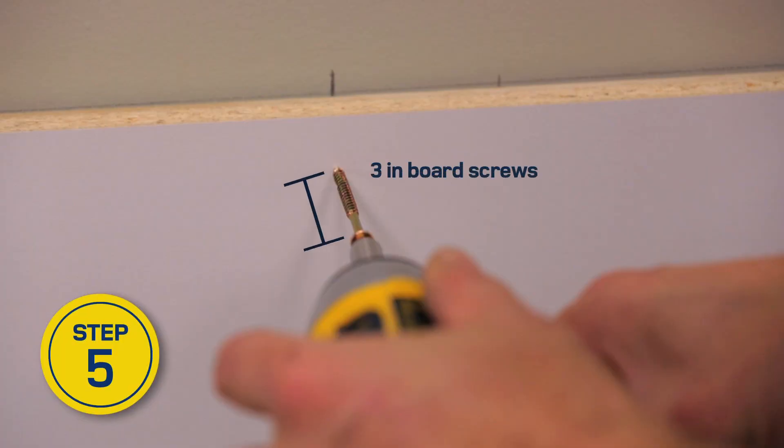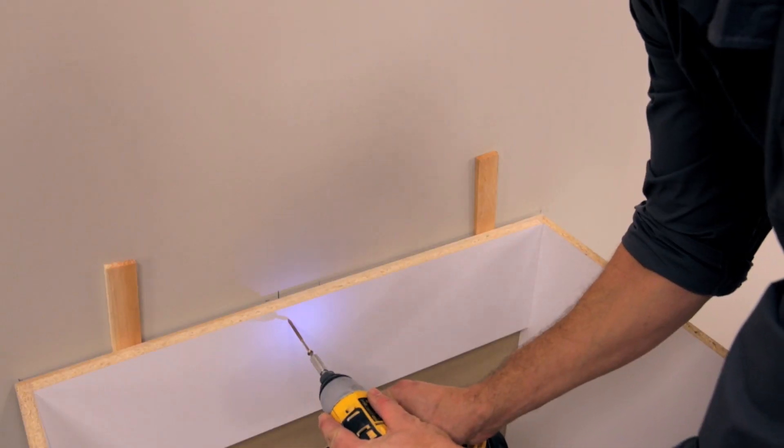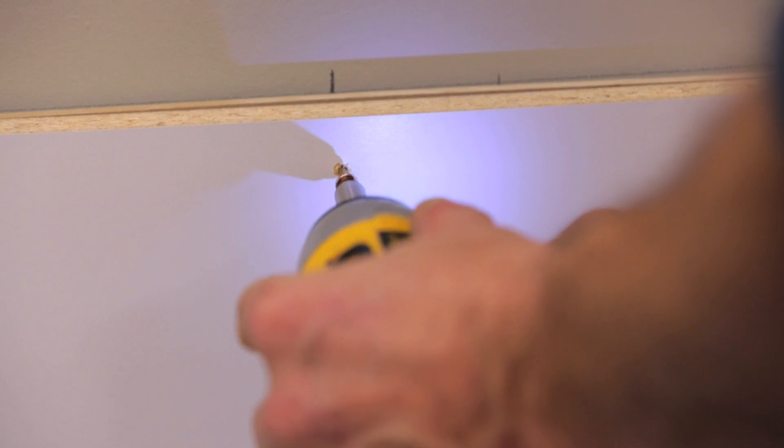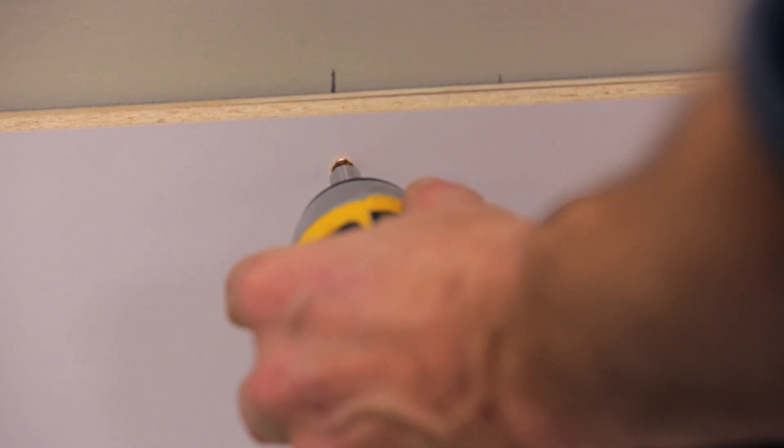To anchor the cabinet, use 3-inch screws. Drill holes through the cabinet, the shims, and into the studs near the top of the cabinet. At the top of the cabinet, one screw for each stud should be enough.